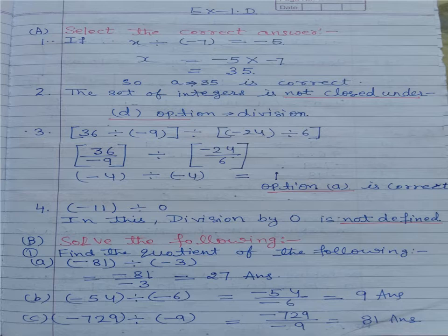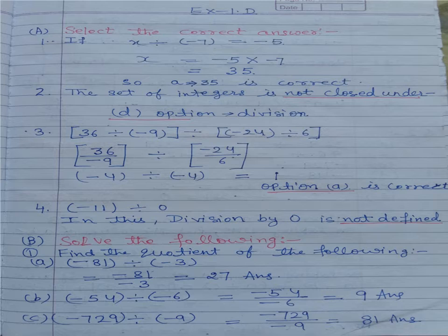Now start part B — solve the following. First question: find the quotient of the following. Part a: minus 81 divided by minus 3 — here both signs are negative, so our quotient is positive. Answer: 27. Part b: minus 54 divided by minus 6 — both signs are negative, so our quotient is positive. Answer: 9.